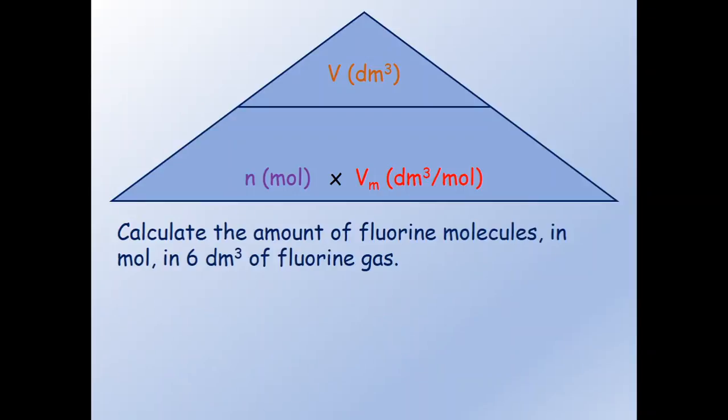Let us look at another example. Calculate the amount of fluorine molecules in mole in 6 decimetre cube of fluorine gas. Here we have to calculate the amount in mole, which is n, so we have n equals. If we cover up n, we find that to calculate it we have to take the volume V divided by the molar volume Vm.